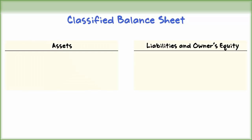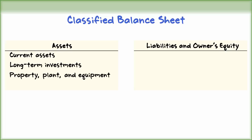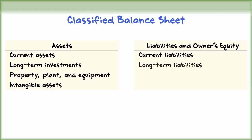A classified balance sheet groups together similar assets and liabilities and owner's equity of a company. Assets are classified as current assets, long-term investments, property, plant and equipment, and intangible assets. The liabilities are classified as current liabilities, long-term liabilities, and owner's equity.